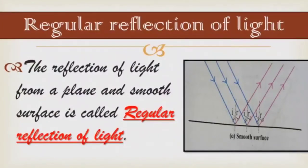Let us see regular reflection of light. The reflection of light from a plain and smooth surface is called regular reflection of light. For regular reflection, the angle of incidence as well as the angle of reflection are the same for all parallel rays falling on the surface. Thus the reflected rays are also parallel to one another. If the angles of incidence for incident rays are I1, I2, and I3, and the angles of reflection are R1, R2, R3 respectively, then these are equal — meaning angle i equals angle r.